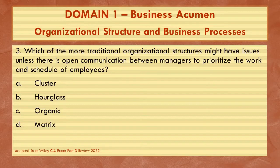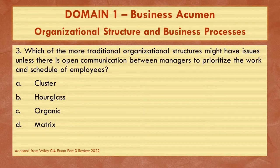Question three. Which of the more traditional organizational structures might have issues unless there is open communication between managers to prioritize the work and schedule of employees? A, cluster; B, hourglass; C, organic; or D, matrix? The key word here is traditional.